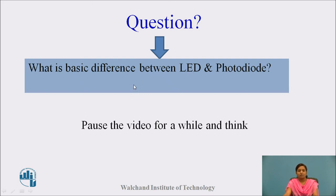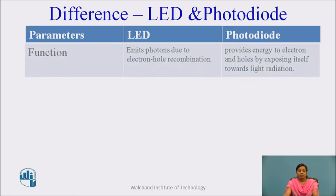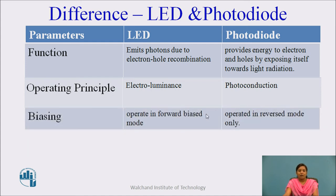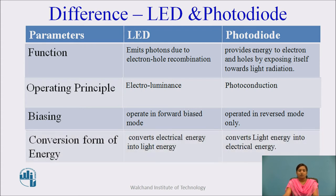The basic difference between LED and photodiode: LED emits photons due to electron-hole recombination, while the photodiode provides energy to electrons and holes by exposing itself to light radiation. LED operates on electroluminescence; photodiode operates on photoconduction. LED operates in forward biasing mode; photodiode operates in reverse biasing mode. LED converts electrical energy into light energy, while photodiode converts light energy into electrical energy.